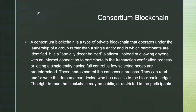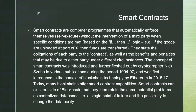Smart contracts are computer programs that automatically enforce themselves — self-executing without the intervention of a third party — when specific conditions are met, based on if-then logic. For example: if the goods are unloaded at port X, then funds are transferred. They state the obligations of each party to the contract as well as the benefits or penalties due under different circumstances. The concept of smart contracts was introduced and fleshed out by cryptographer Nick Szabo in various publications during the period 1994 to 1997, and was first introduced in the context of blockchain technology by Ethereum in 2015.